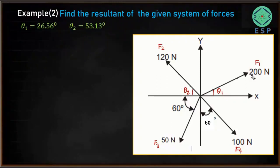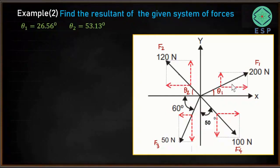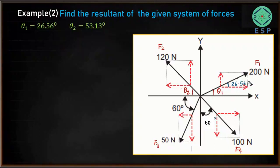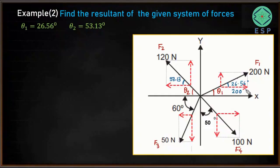We resolve the forces 200, 120, 50, and 100 Newton along the x and y directions. For the 200 Newton force (F1), the angle theta 1 is 26.56 degrees. So along the x direction it will be 200 cos 26.56, and along the y direction it will be 200 sin 26.56.